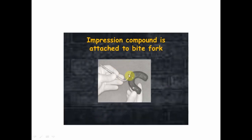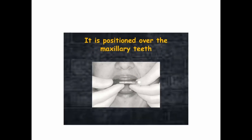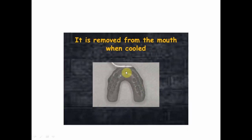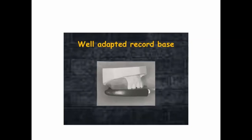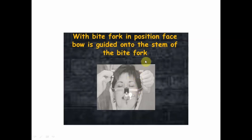For the clinical procedure, impression compound is attached to the bite fork, which is positioned over the maxillary teeth. The bite fork with the stem is positioned over the maxillary teeth and removed from the mouth when set, and the indentation of the teeth is found on the impression compound, which is used in fabrication of fixed partial dentures. The record base is well adapted onto the impression compound, and with the bite fork in position, a facebow is attached onto the stem of the bite fork.